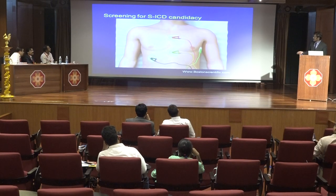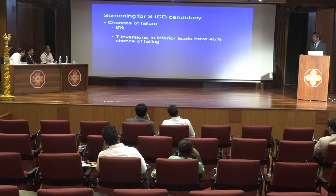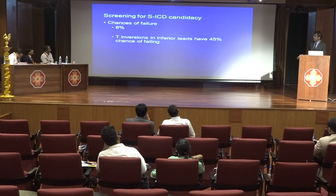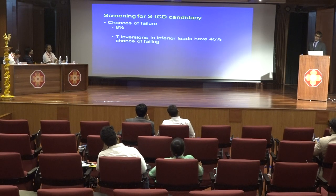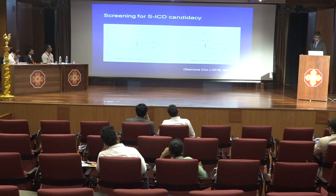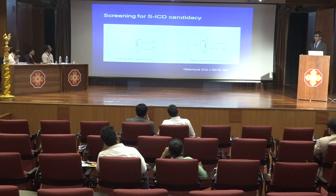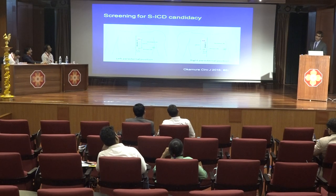These are examples of electrode locations used for the screening tools. The chance of screening failure is nearly 8%, and patients with T-wave inversions in the inferior leads have nearly a 45% chance of failing. Okamura et al. found that in patients with congenital heart disease, performing the screening on the right side instead of the left increased the efficacy of screening.